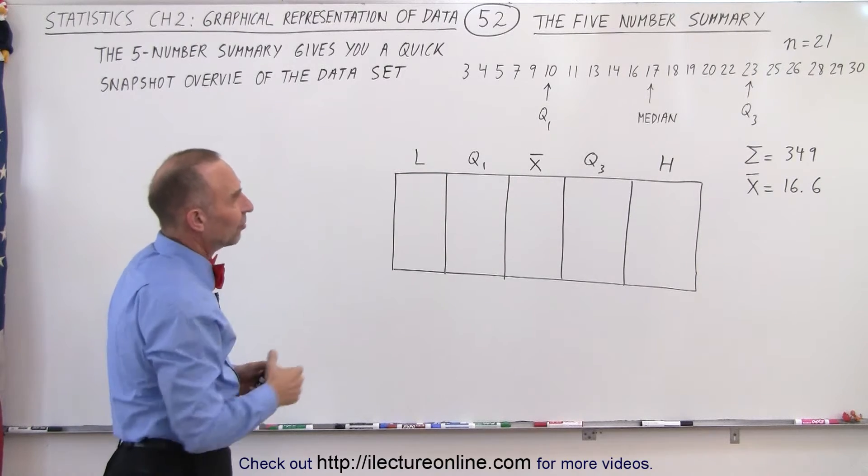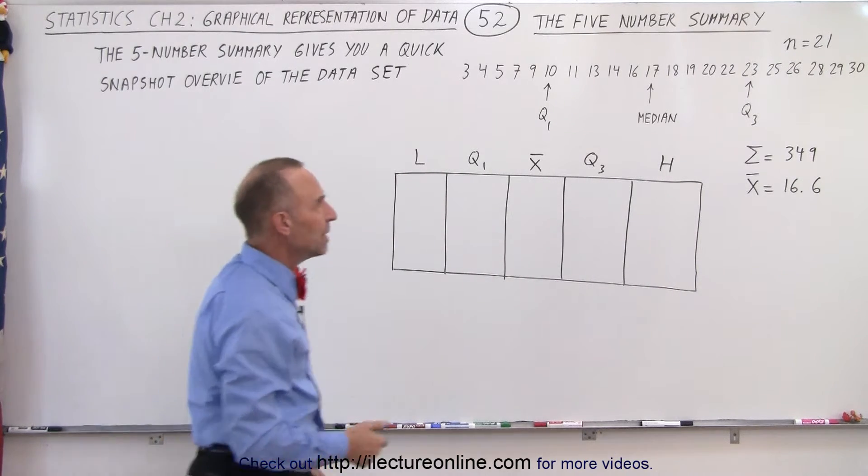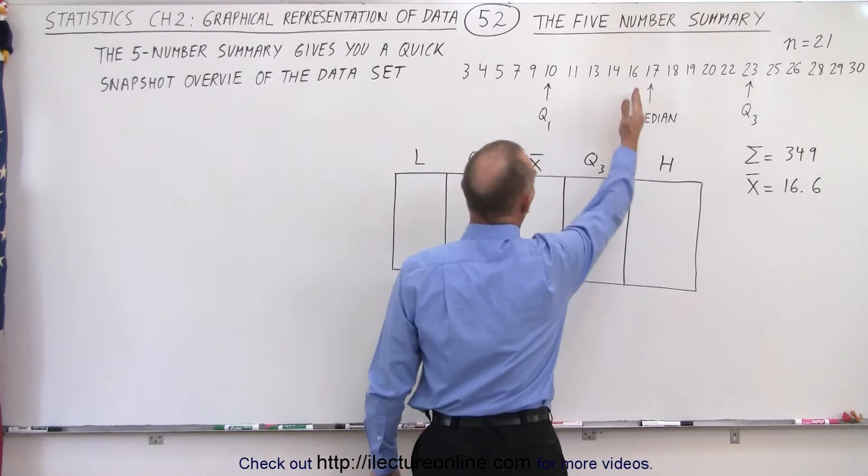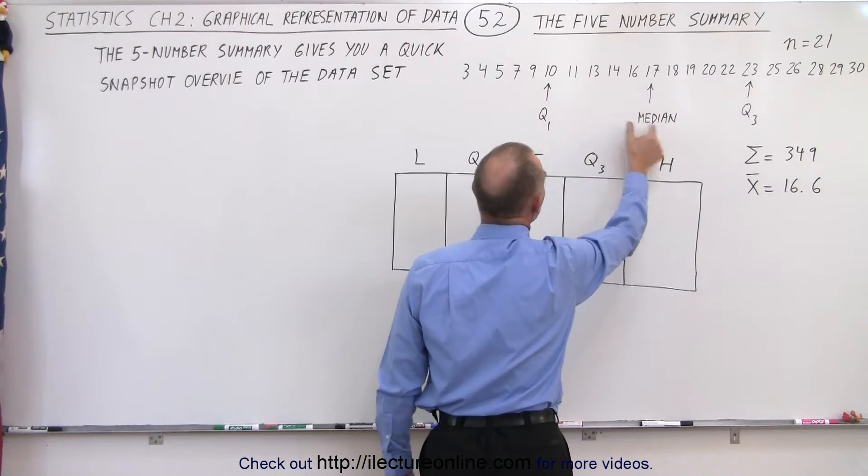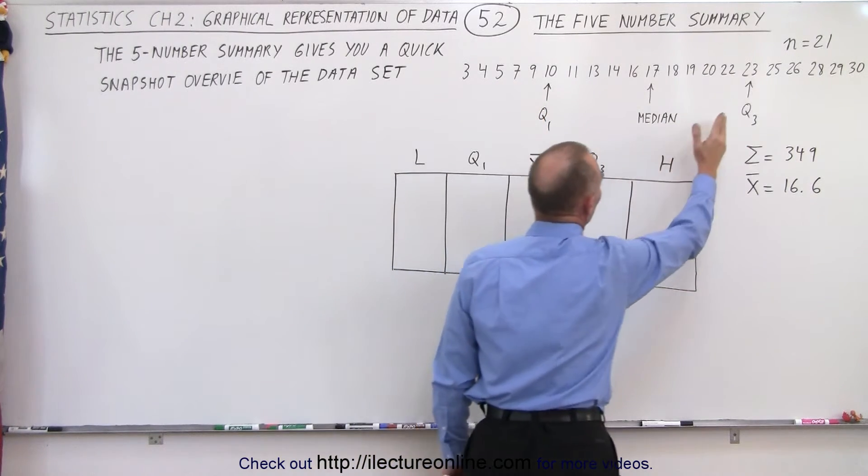But let's say we have a data set like this, there's 21 data points. The median is right halfway in between. We have 10 data points on either side of the median. We have quartile one. We have quartile three.